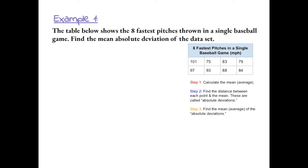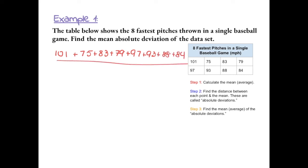Step 1: we want to calculate the mean. To calculate the mean, we add together all the numbers in the data set and divide by how many numbers there are. There are 8 numbers in the data set. The sum of the numbers is 700, so we divide by 8, which gives us 87.5. We have now completed step 1.